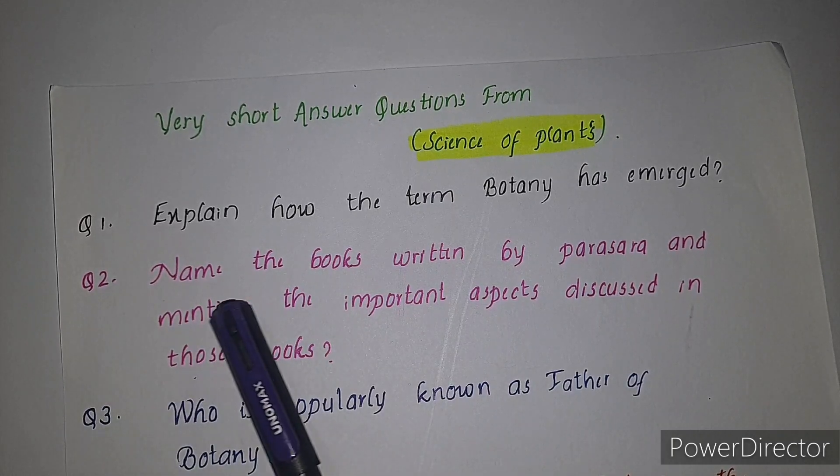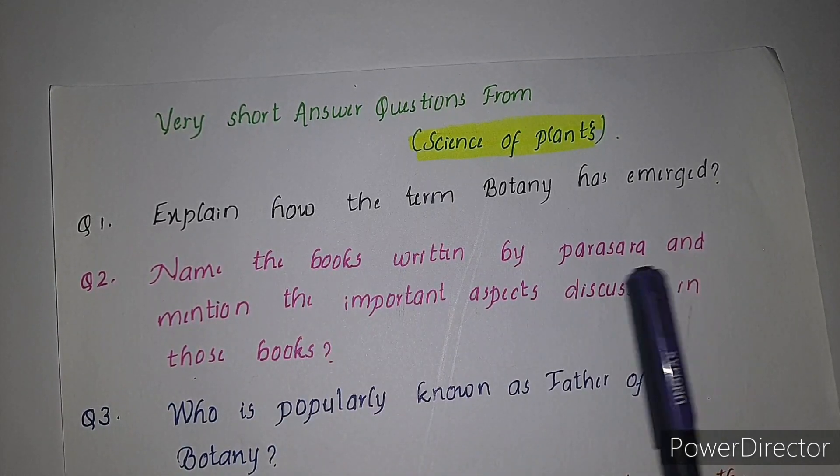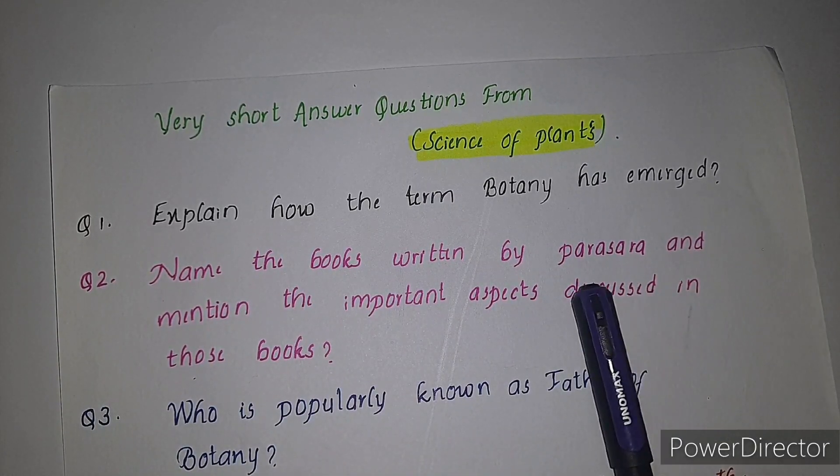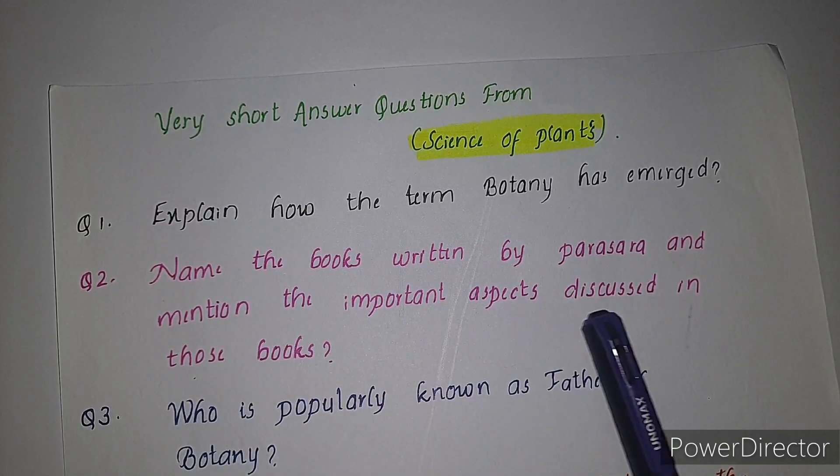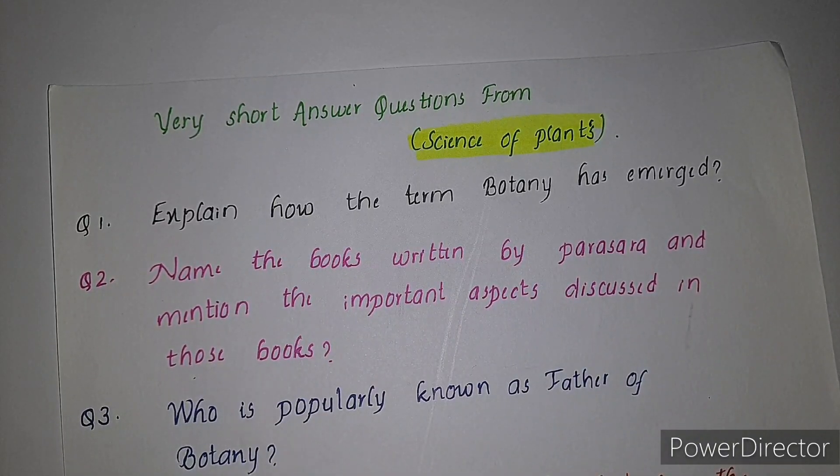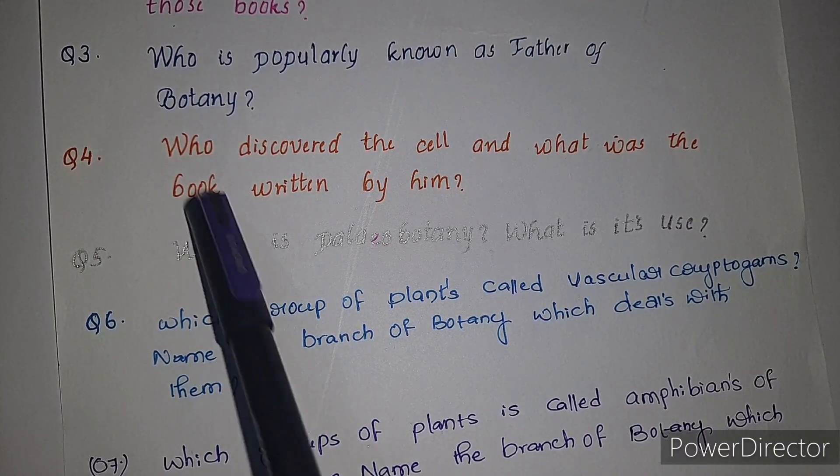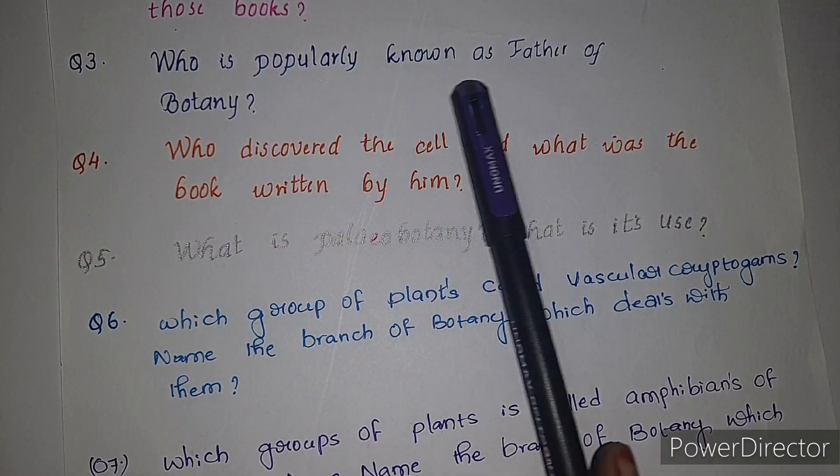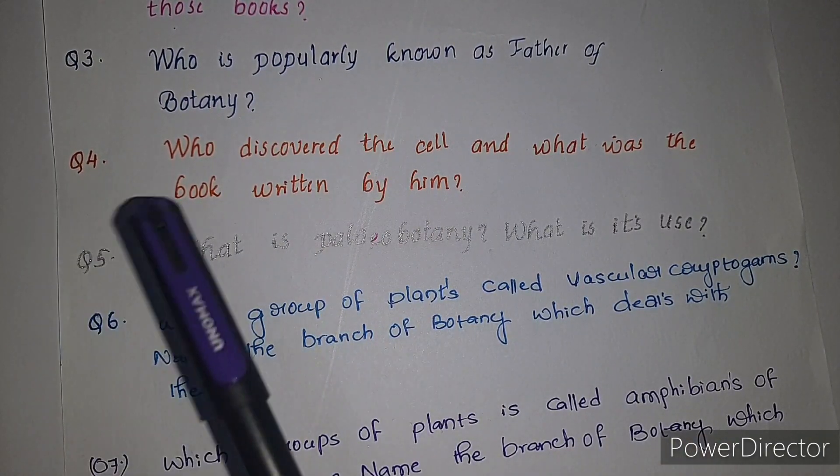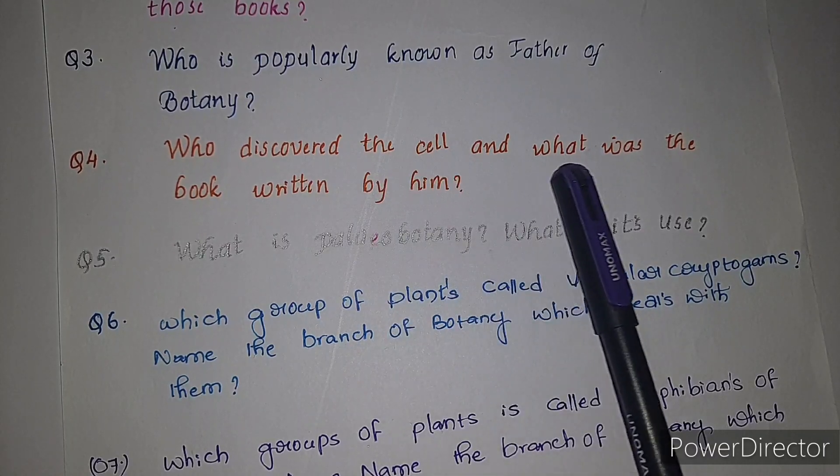Second question: name the books written by Parasara and mention the important aspects discussed in those books. Third question: who is popularly known as father of botany? Fourth question: who discovered the cell and what was the book written by him?